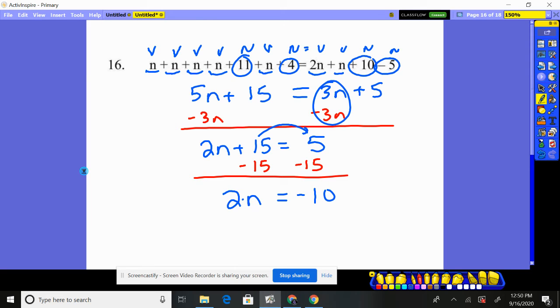Now, how do we finish it out? How do we get rid of that multiplying by two? Because we want just a single n. We'll divide by two. Divide by two. N is equal to negative five.